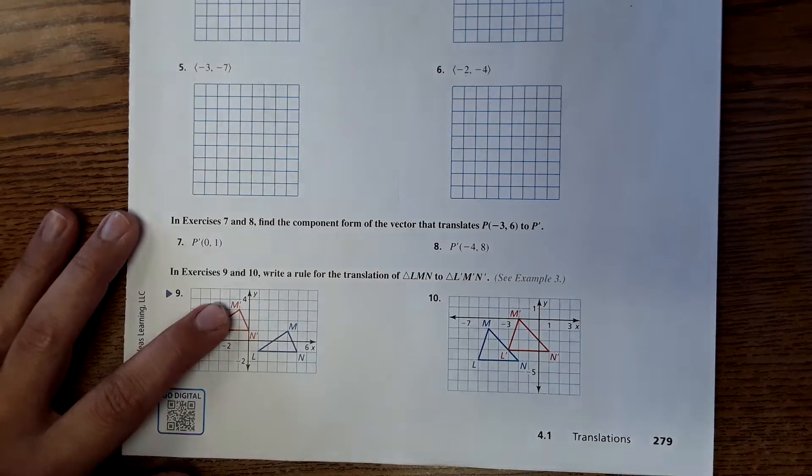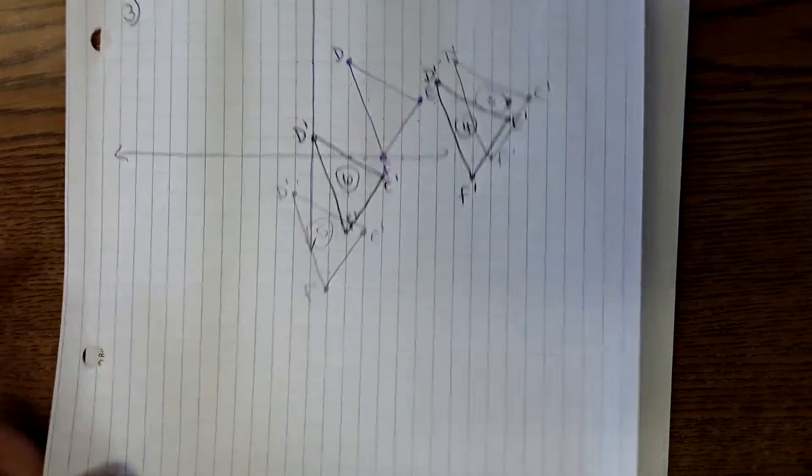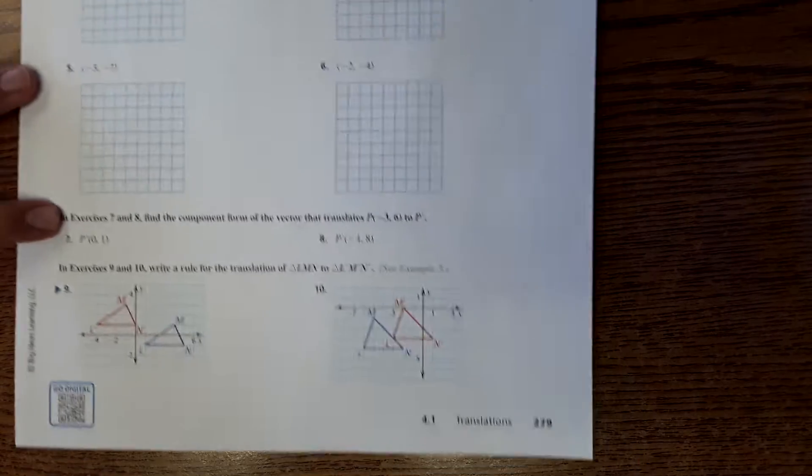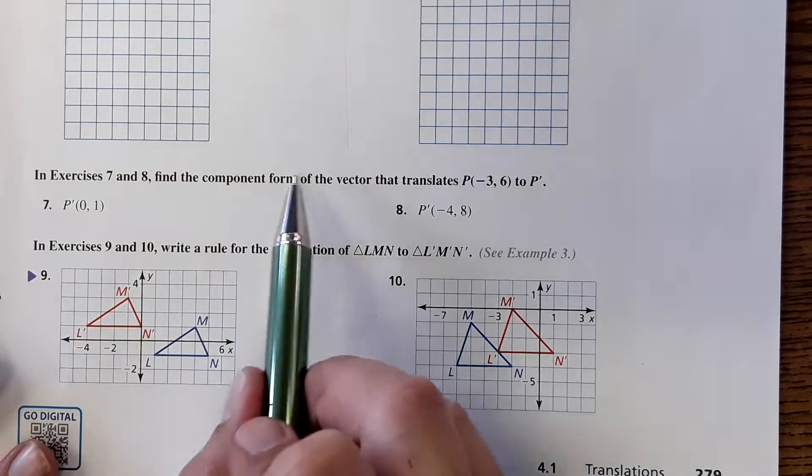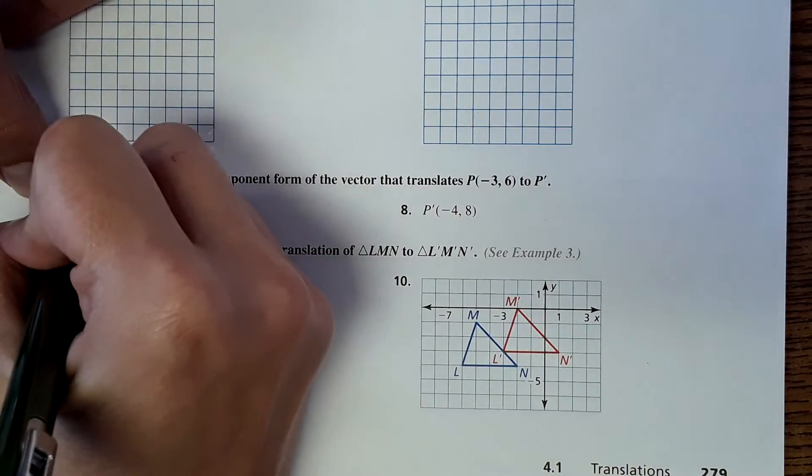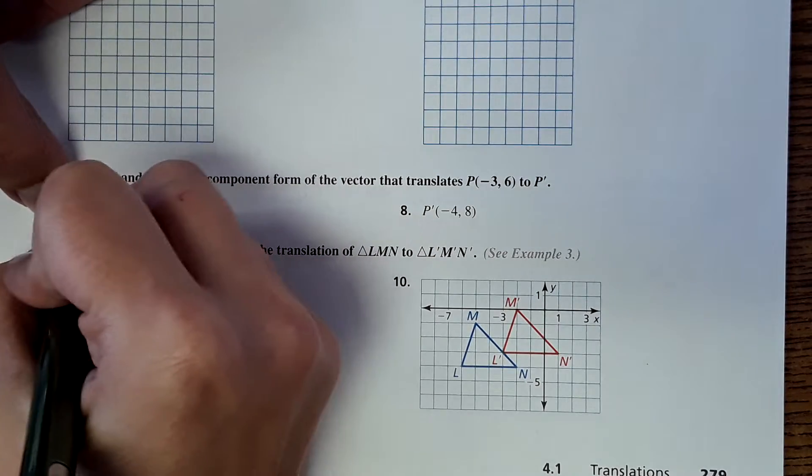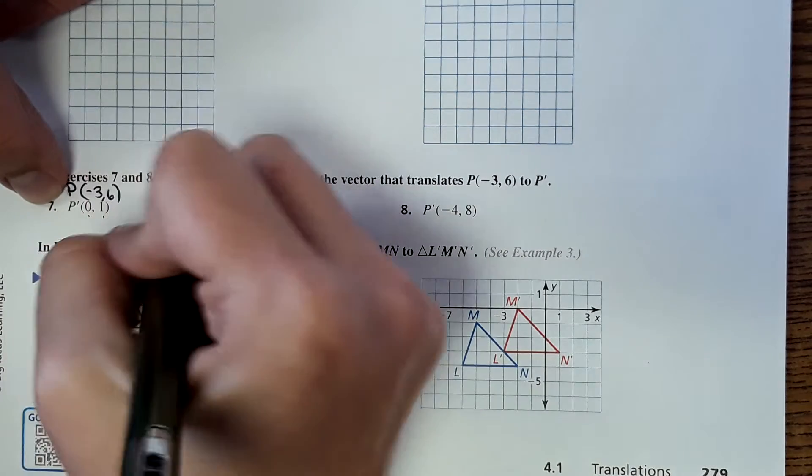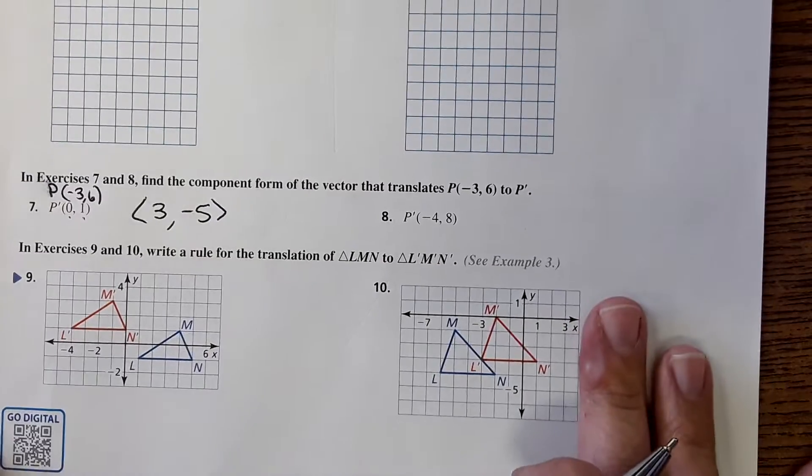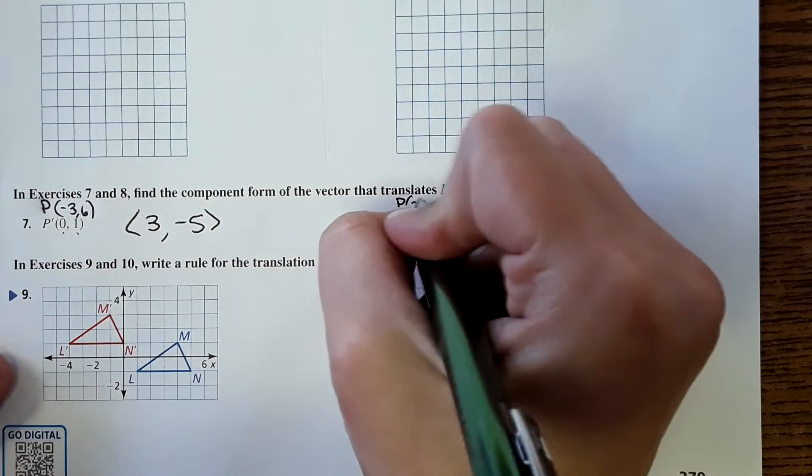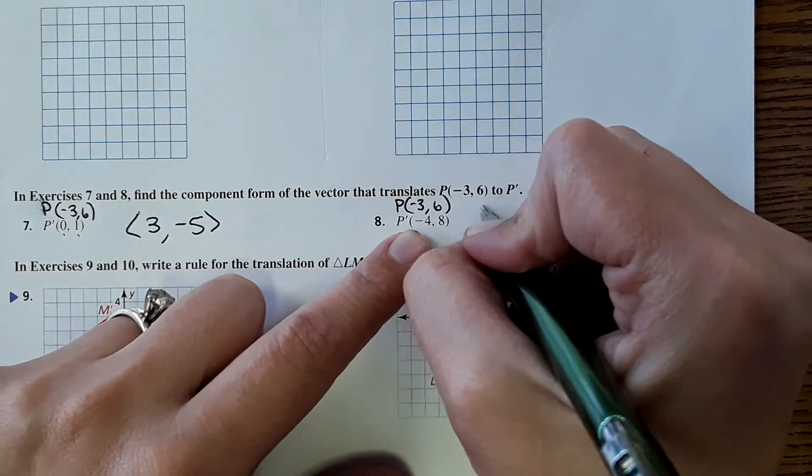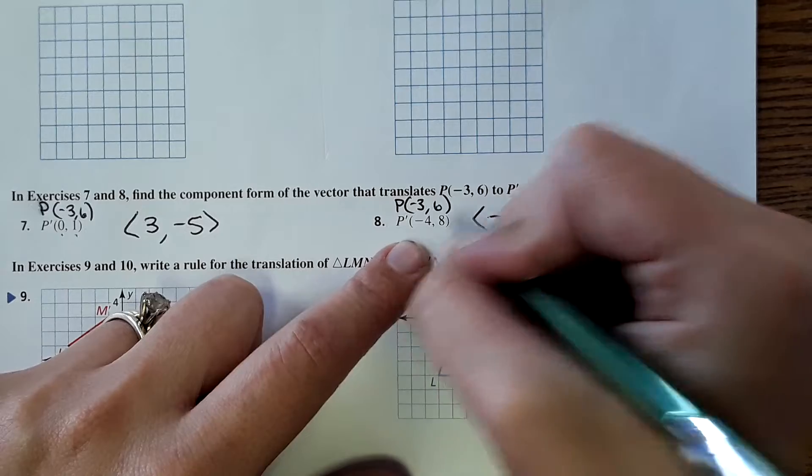Now I'm going to move down to number 7. So for number 7, it says find the component form of the vector that translates point P to P prime. So the original point, point P, is at negative 3, 6, and then it goes to this point. It looks from negative 3 to 0, that's positive 3. And then from 6 to 1, that is negative 5. And then for 8, same process, we have our original at negative 3, 6. Going from negative 3 to negative 4, that would be negative 1. And then from 6 to 8, positive 2.